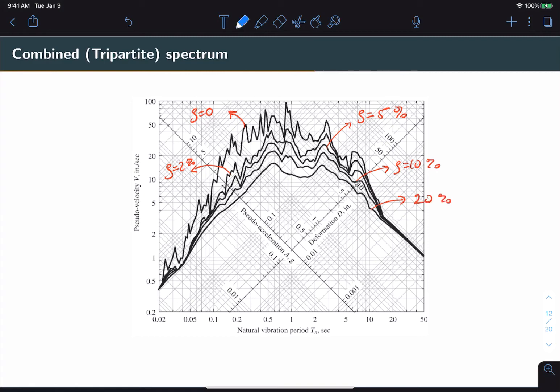Now reading from the spectrum is not so complicated as you might think at first. Let's say we want to find the corresponding D, V, and A values for a system with a natural period of 2 seconds and a damping value of 2%. We simply find 2 seconds on the horizontal axis and we follow that until we intersect our curve for 2% damping. To find the value of D, we simply follow the line perpendicular to the D axis. And we find that it intersects at roughly 7.5.